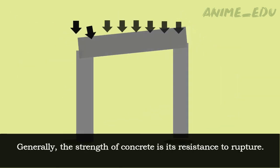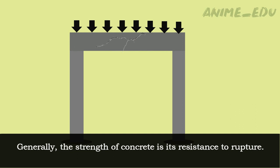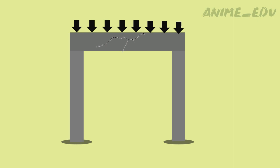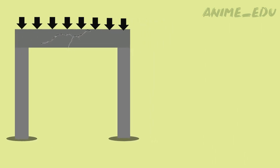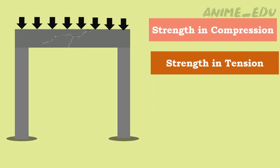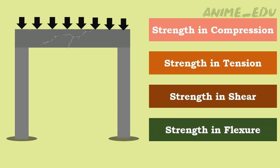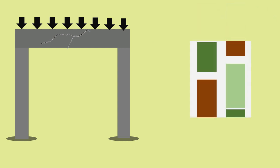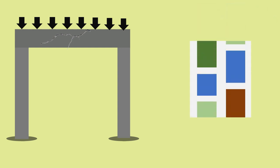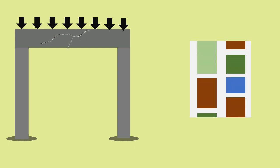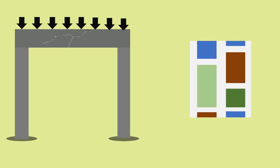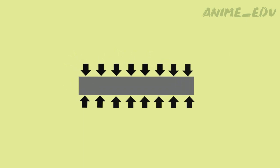Generally, the strength of concrete is its resistance to rupture. It can be measured in a number of ways, such as strength in compression, strength in tension, strength in shear, and strength in flexure. These strengths of concrete are calculated by various methods, which will be discussed in future videos.